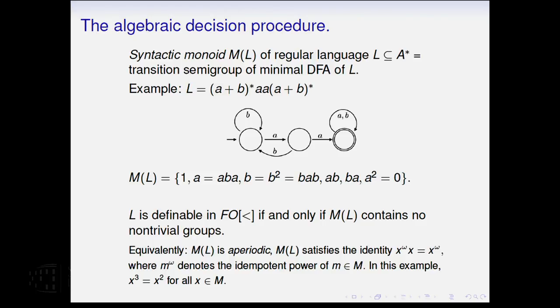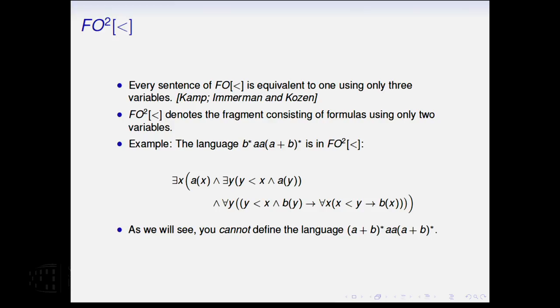So this is a sort of game that I'm going to play with the two-variable fragment. You get these equations, and the way to tell whether or not a language is definable in this logic is to do this kind of computation in the finite semigroup. So in first-order logic with this less-than relation, every sentence is equivalent to one that uses only three variables. You can reuse the variables.